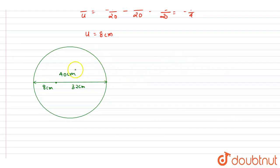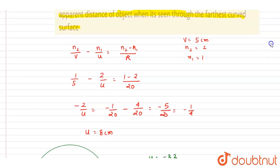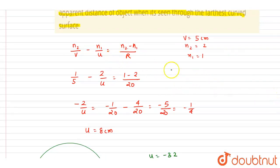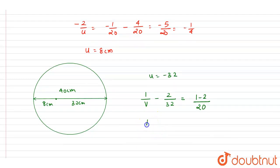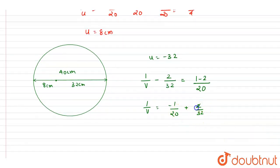We apply the same spherical refraction formula again. The object is in a medium of refractive index 2, but this time u equals minus 32. The image is forming in air. Writing the same formula: 2 by 32, we get 1 by v equals, and simplifying we get 1 by 16 plus the other term, which gives us the value of v.